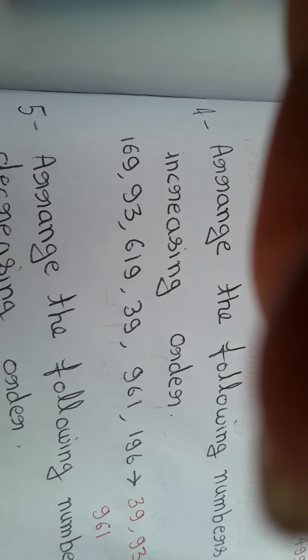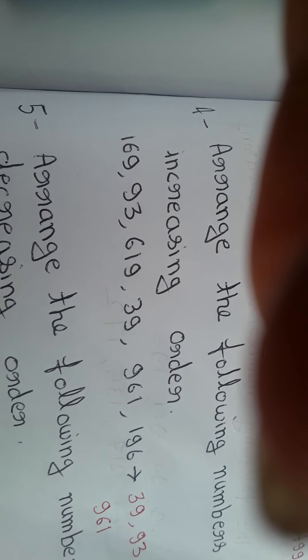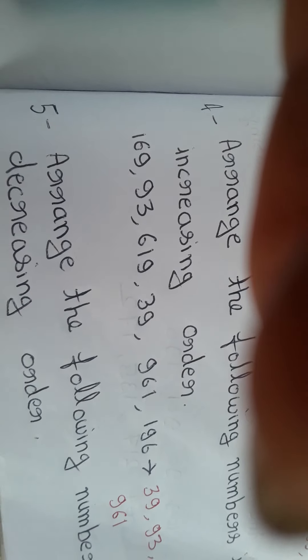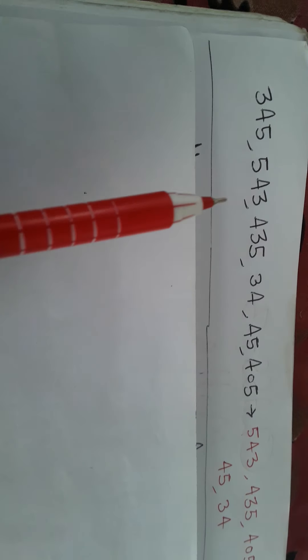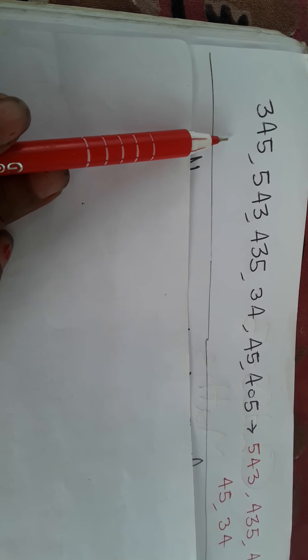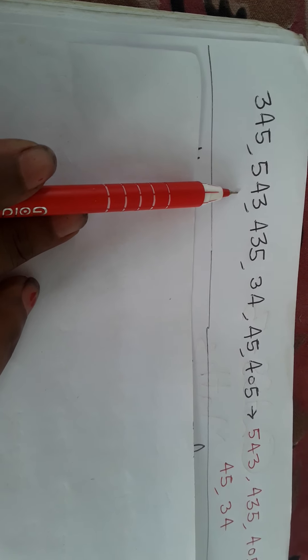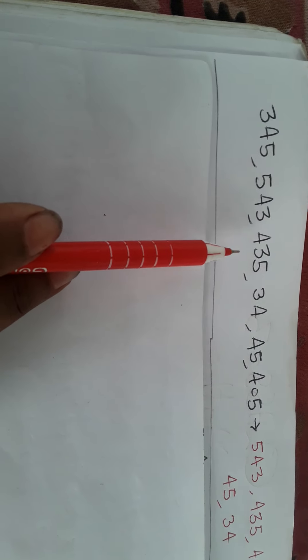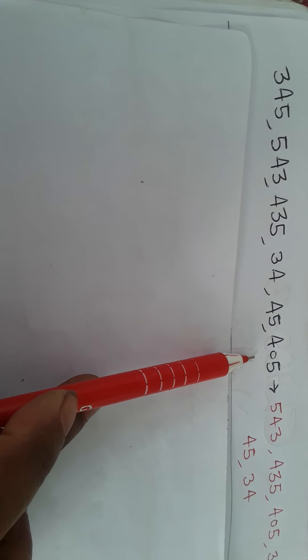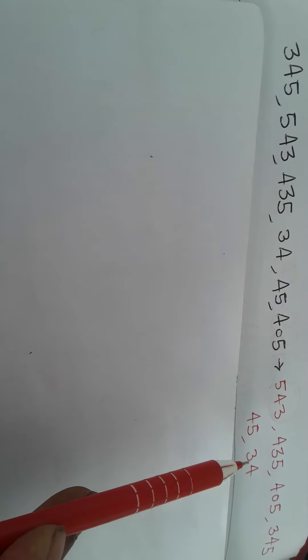Next question: arrange the following numbers in decreasing order. Decreasing order means from largest to smallest — biggest first, then smaller ones. The given numbers are: 345, 543, 435, 34, 45, 405.